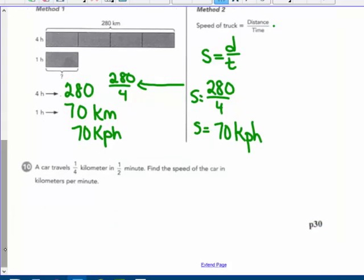Number 10 here. A car travels a quarter of a kilometer in half a minute. Find the speed of the car in kilometers per one minute. Okay. So my speed would be equal to the distance divided by the time, which is one fourth divided by one half. Ooh, that's a complex fraction.